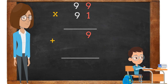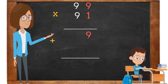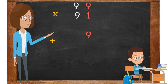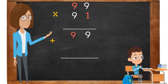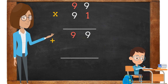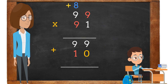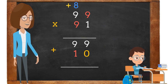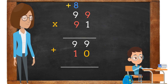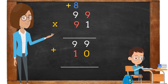Math problem number 5. The first step in this problem is to multiply 1 times 9. 1 times 9 is 9. The 9 is placed in the ones place. The second step is to multiply 1 times the 9 in the tens place. 1 times 9 is 9. The 9 is placed in the tens place.